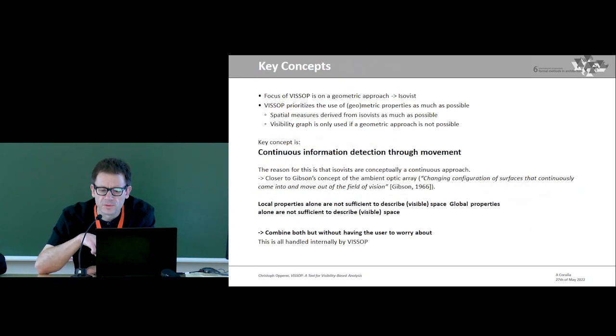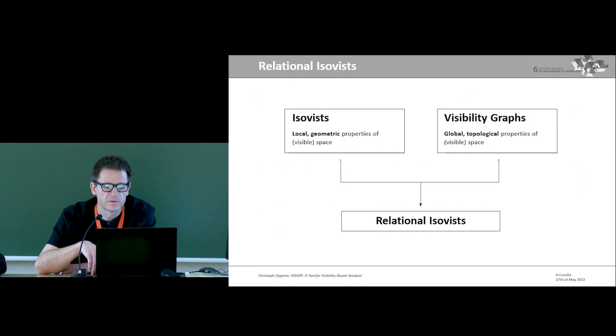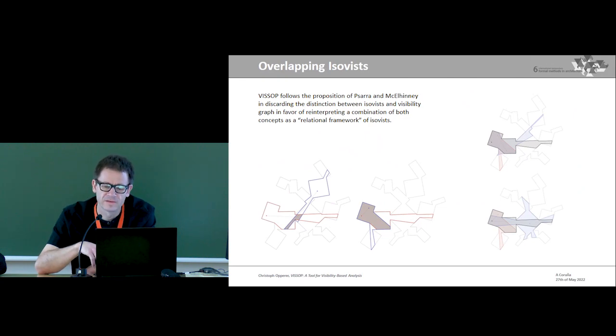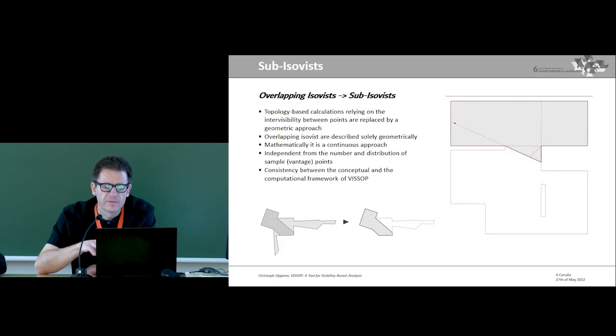To cut it short, the focus of VisApp is on the ISOVIST and to use geometric properties as much as possible. Visibility graphs are only then used when a geometric approach is not possible or at least not feasible. To do so, VisApp relies on the concept of relational ISOVIST, which in turn is based on the concept of overlapping ISOVIST by Sophia Psarro. However, to substitute any topological operation, VisApp uses purely geometric approach based on sub-ISOVIST. Basically these are ISOVIST computed within an ISOVIST by interpreting its boundaries as new environments.